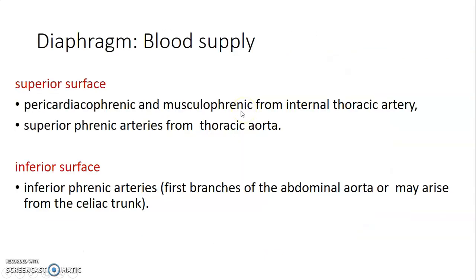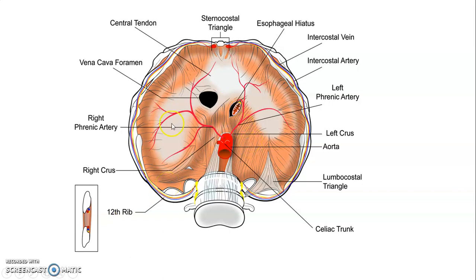The blood supply of the diaphragm is as follows. Superiorly, the internal thoracic artery gives pericardiophrenic and musculophrenic vessels supplying the superior surface. There are also contributions from the thoracic aorta giving superior phrenic arteries. The inferior surface receives inferior phrenic arteries, which are the first branches of the abdominal aorta, though they can also arise from the celiac trunk. The diagram shows the celiac trunk, left phrenic artery, and right phrenic artery giving branches to different parts of the diaphragm.